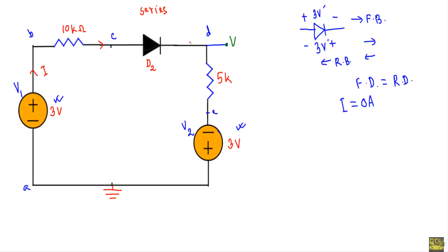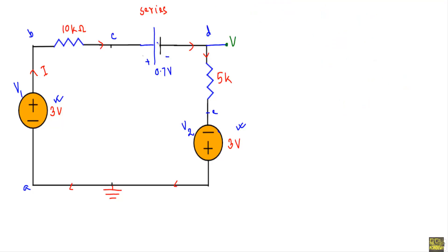To find the voltage drop across the 5 kilo ohm resistor I first calculate the current I in the series circuit. The positive terminal of the 3 volt source is connected at the P side of diode D2 and the negative terminal at the N side — and similarly for the other 3 volt source — meaning both sources drive D2 in forward bias. Since D2 is in forward bias, I replace it with its constant voltage drop model of 0.7 volt. The current I flows in this direction, making one terminal of the 5 kilo ohm resistor positive and the other negative.